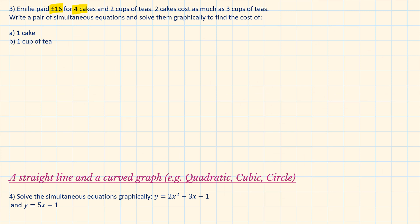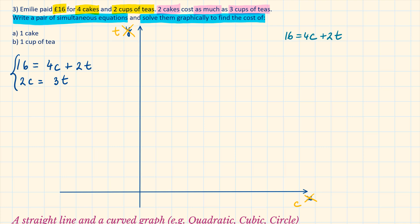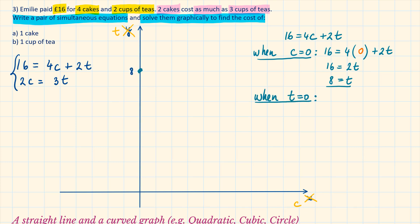Question 3: Emily paid £16 for 4 cakes and 2 cups of tea. 2 cakes cost as much as 3 cups of tea. Write a pair of simultaneous equations and solve them graphically to find the cost of 1 cake and 1 cup of tea. The first sentence gives 16 equals 4c plus 2t, and the second gives 2c equals 3t, where c represents cakes and t represents teas. We change the axis labels to c and t. When c equals 0, t equals 8; when t equals 0, c equals 4. Let's plot this and draw the first line.